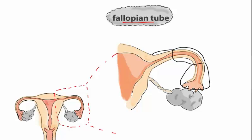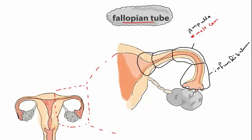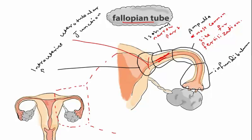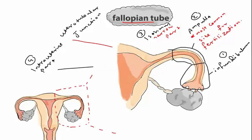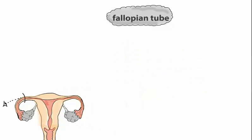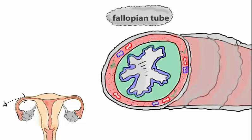The fallopian tube is divided into four parts: the infundibulum, which contains the fimbria; the ampulla, which is the most common site for fertilization; the isthmus, which is a narrow part with a narrow lumen; and the fourth part is the intrauterine part. The junction between the fallopian tube and the uterus is called the uterotubular junction.